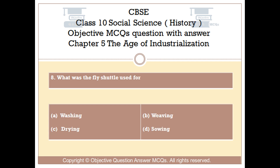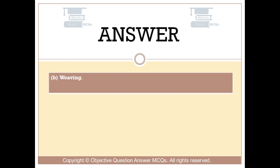Question number 8. What was the fly shuttle used for? Option A, washing; Option B, weaving; Option C, drying; Option D, sewing. The right answer is Option B: Weaving.